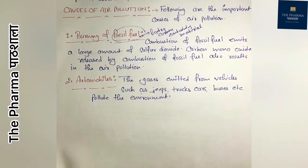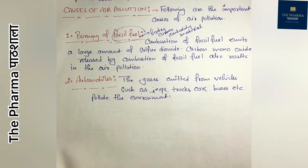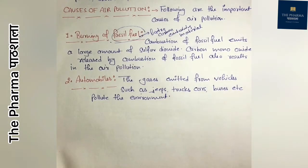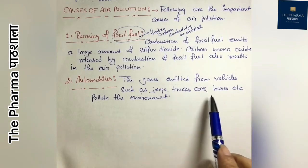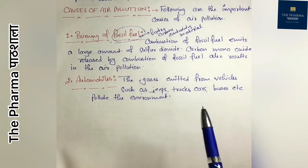The second cause is automobiles — meaning vehicles. Vehicles use petrol and diesel and emit smoke into the environment. The gas emitted from vehicles such as jeeps, trucks, cars, buses, etc. pollutes the environment.